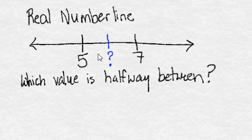Finding the value halfway between is the same as finding the average of the two numbers. So we need to add them together and divide by 2.